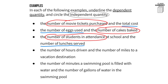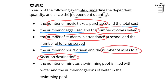For the next example: the number of hours driven and the number of miles to a vacation destination. It makes more sense to say the number of hours driven depends on the number of miles to a vacation destination, so hours driven is the dependent quantity. In the last example, the number of minutes a swimming pool is filled with water and the number of gallons of water in the swimming pool — the number of gallons will depend on how many minutes it's filled with water.